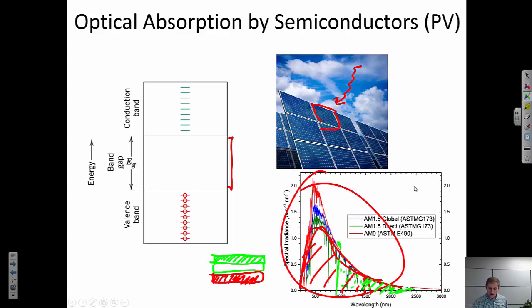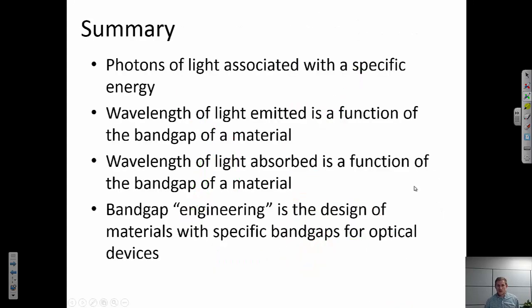Again, because this light is coming in within a fixed range of energy, we can have the band gap be just small enough to absorb energy within that region of wavelength. So the whole idea behind photovoltaics is that we're tuning this band gap so that we're able to absorb optical light with specific wavelengths.